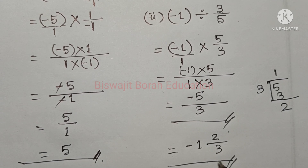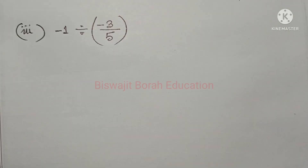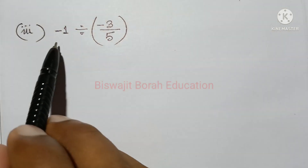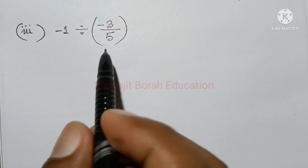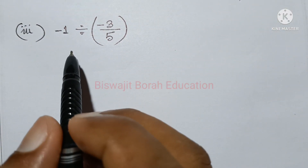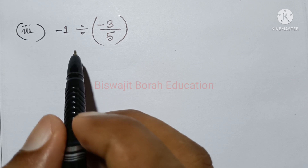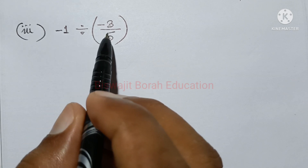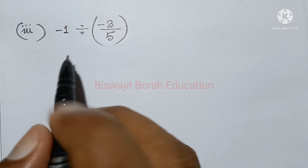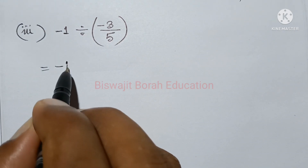So next, 3 number to swap. This is minus 1 divided by minus 3 by 5. If you have 2 number minus 3 by 5, you will have minus 3 by 5. So if you have minus 1...